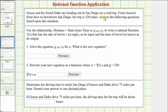Gonzo and his friend Duke are heading out to San Diego on a road trip. From Gonzo's front door to downtown San Diego, the trip is 520 miles. We want to answer the following questions based upon this situation. We want to use the relationship distance equals rate times time, or the equation d equals r times t, to write a rational function T of r that has the rate of travel r in miles per hour as its input and the time of travel in hours as its output. We'll do this step by step.